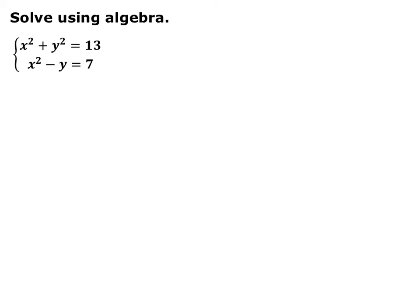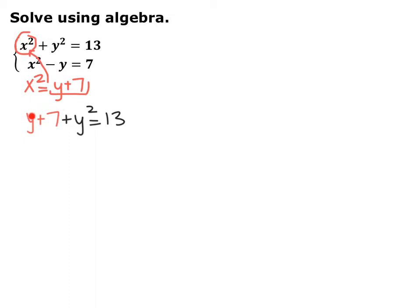Now we have the same system — we already know the solutions — but now we want to solve using algebra. You can use the same skills of substitution and elimination. You don't always have to solve for one variable. For instance, in the second equation I can solve for x squared: x squared equals y plus 7. Since x squared appears in the first equation, I can substitute y plus 7 in for x squared. So now we have a quadratic we can solve for y. Go ahead and pause the video and solve for y.